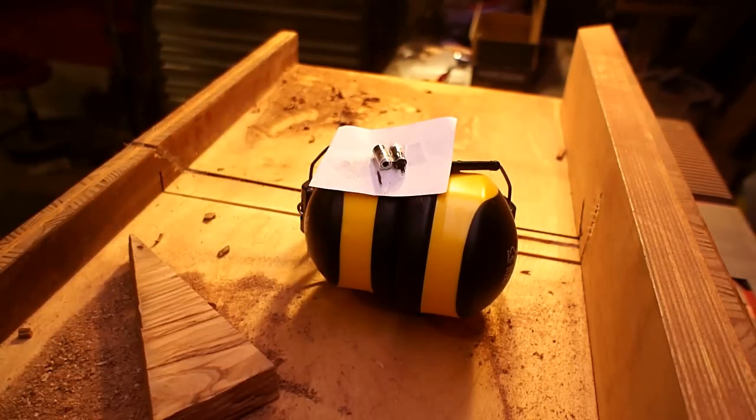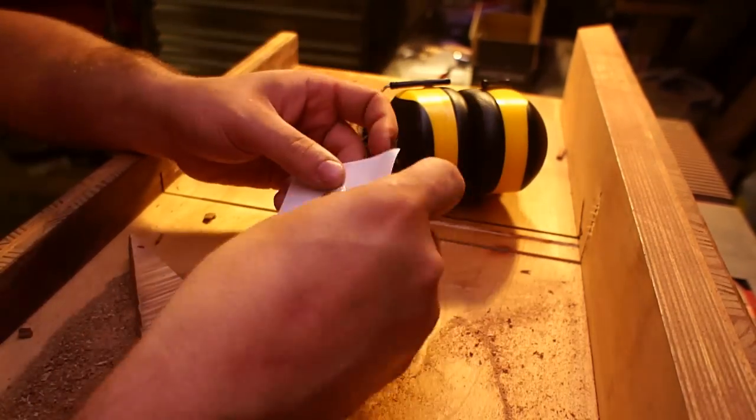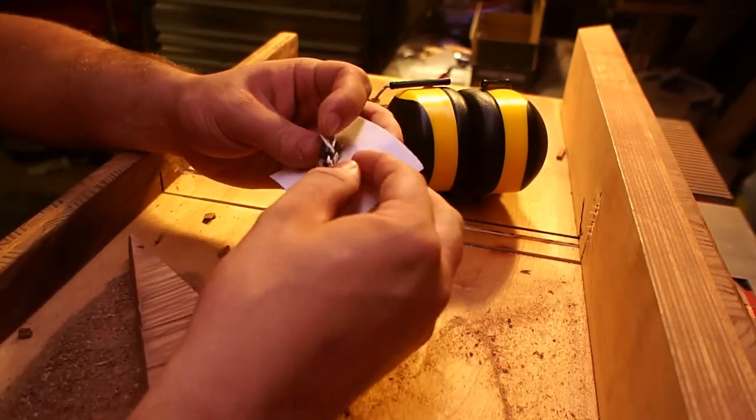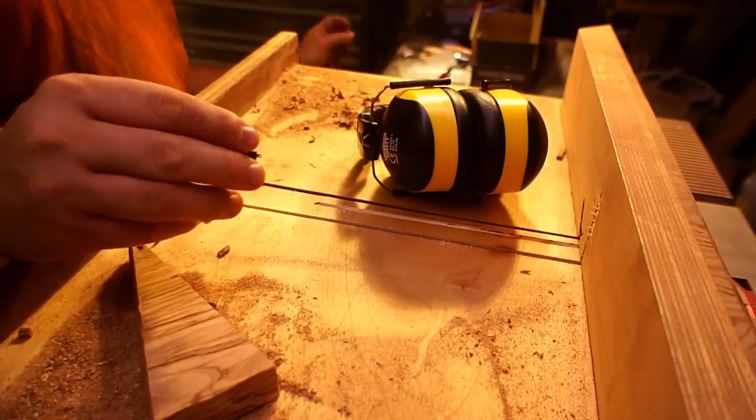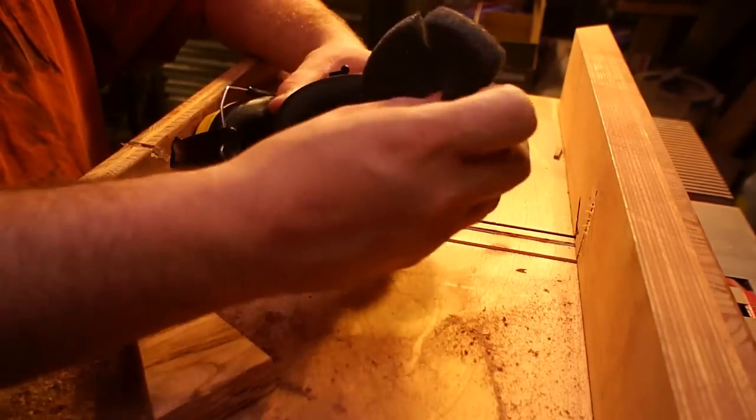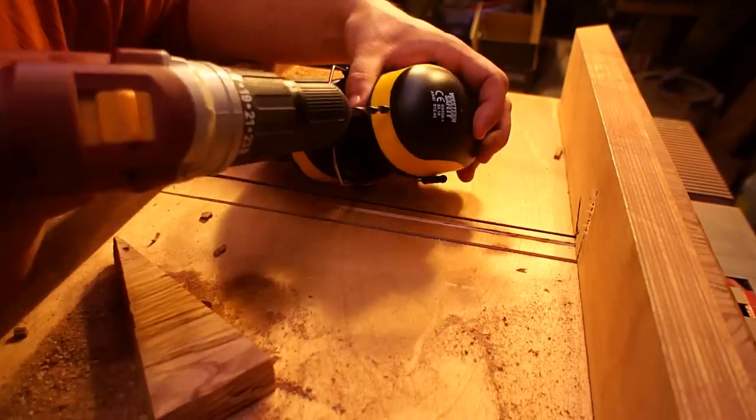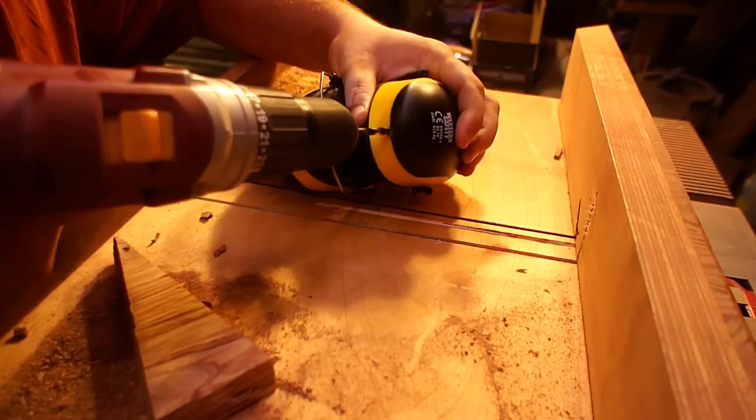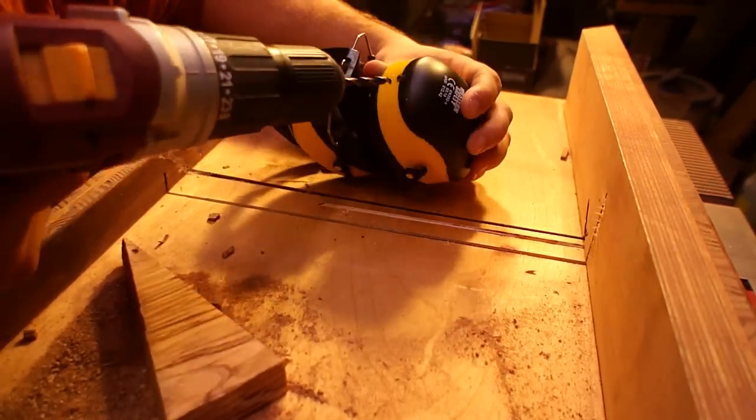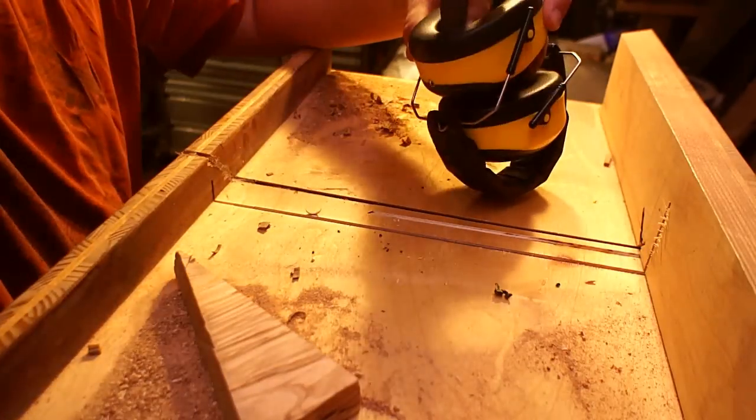So I ordered this set of headphone jacks on eBay. I wanted to be able to take the headphone jack out of these if I don't just use them as regular hearing protection and not have any music going through them. If you're searching for these on eBay or Amazon, I think I use the search term phono female jack in and I got some of them.